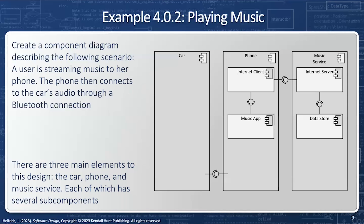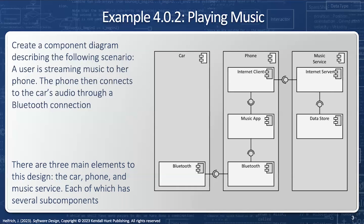We need to get the music from the app to the car, and we're going to use Bluetooth for that. Bluetooth provides an interface that the music app can consume — many things like the phone or other devices could use that same interface — so Bluetooth is provided and the music app requires it. The car is also going to have a Bluetooth component, and it's going to provide to a variety of different things, one of which is the play service which operates the speakers and requires Bluetooth.